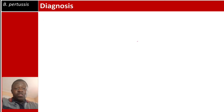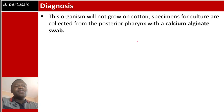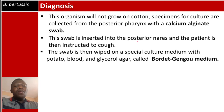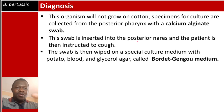For diagnosis, this organism will not grow on cotton, so specimens are collected from the posterior pharynx using a special calcium alginate swab. The swab is inserted into the posterior nares and the patient is instructed to cough. The swab is then wiped onto a special culture medium containing potato blood glycerol agar, called Bordet-Gengou medium — a classic MCQ answer for Bordetella pertussis.